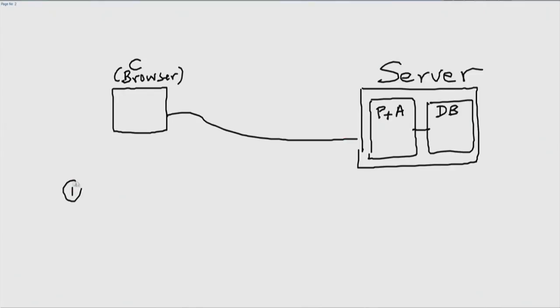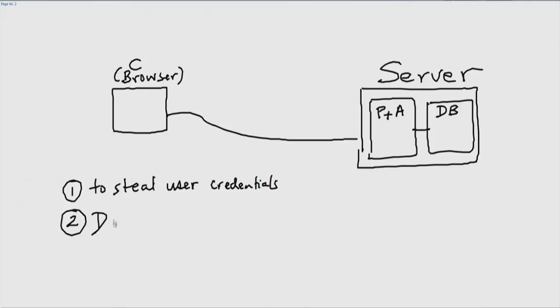Let's look at the goals first. Various kinds of web security attacks could have the following goals: for example, to steal user credentials — perhaps stealing a password, PIN, etc. There could also be things like DoS or DDoS. What we are going to consider right now is something more along the lines of stealing user credentials.